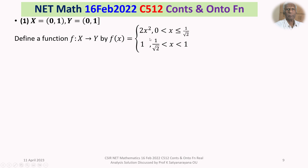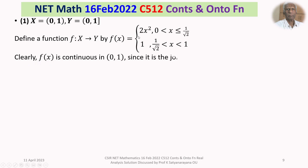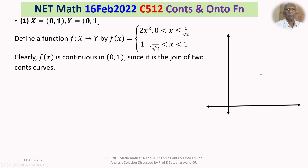Now, 2x² is continuous on (0, 1/√2] and f(x) = 1 is a constant function, also continuous. If there is any discontinuity, it would be at x = 1/√2. But the left limit and the right limit at x = 1/√2 are each equal to 1, so they are equal. Therefore f is continuous at x = 1/√2, and thus f is continuous on the whole interval (0,1) as the join of two continuous pieces.